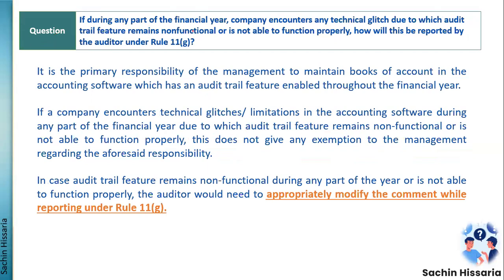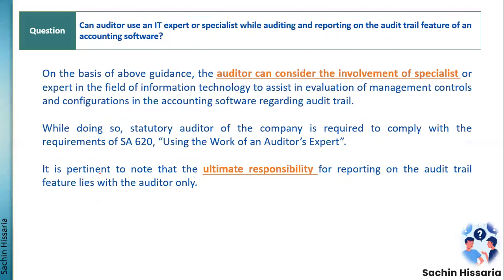Next question: if during any part of a financial year the company encounters a technical glitch causing the audit trail feature to remain non-functional, what should an auditor do? If the audit trail feature remains non-functional for any part of the year — even for one day — you need to modify your report. Highlight the period for which the audit trail was not configured or functioning properly, and accordingly modify your report under Rule 11G.